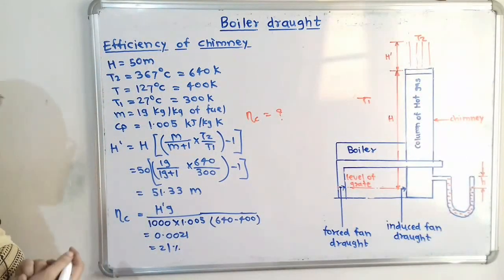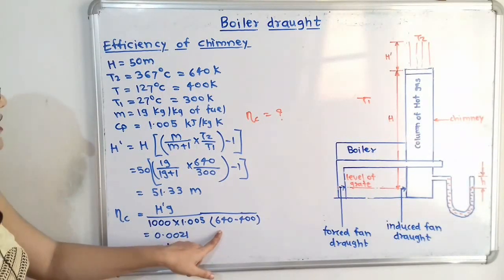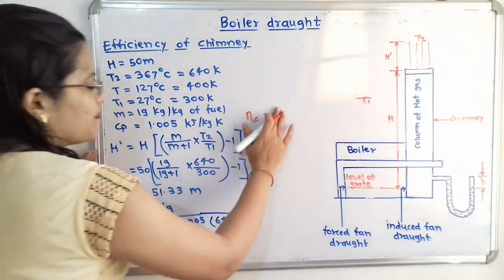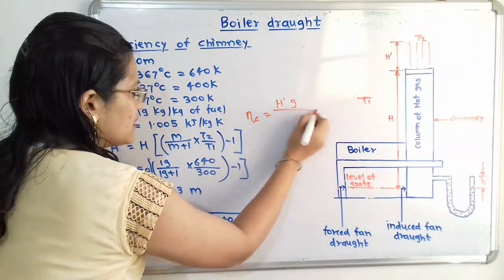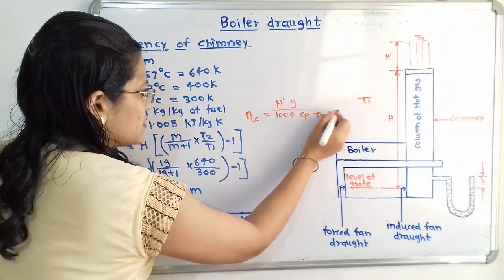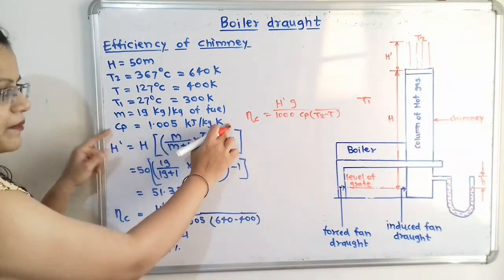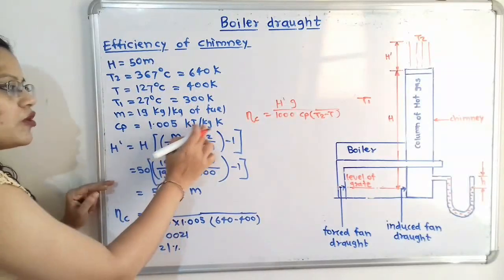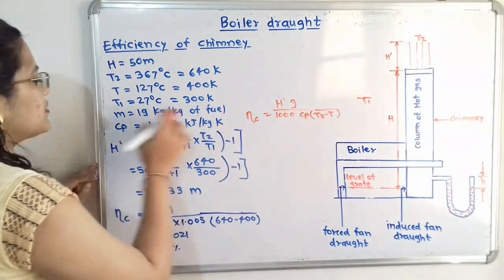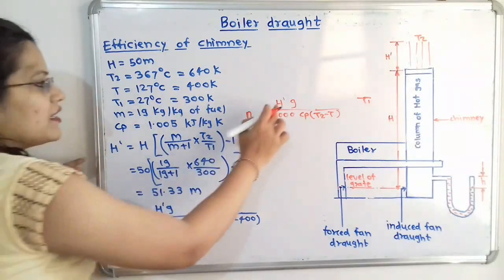Using the formula η_c = h'g / (1000 × Cp × (T2 - T)). Since Cp is in kJ/kg·K, multiply by 1000 to convert to J/kg·K. Temperature difference: T2 - T = 640 - 400 = 240 K. First, calculate h': h' = 50 × [19/(19+1) × (640/300) - 1] = 51.33 m.